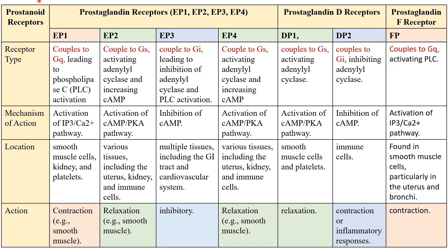Next are the prostaglandin F receptors. FP receptors are the muscle contractors — they couple with the Gq protein, signaling muscle contraction. FP receptors are involved in various functions including uterine contraction during childbirth and maintenance of blood flow. FP receptors are often found in smooth muscle tissues, particularly in the uterus, where activation sends the signal for muscles to contract, playing a significant role in the process of childbirth.